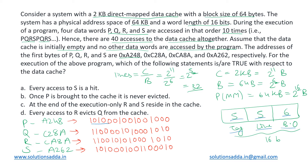Breaking the binary addresses into fields: the first 5 bits represent the tag, the next 5 bits represent the line index, and the remaining 6 bits represent the block offset. This gives us the tag, line, and offset fields for each of P, Q, R, and S.